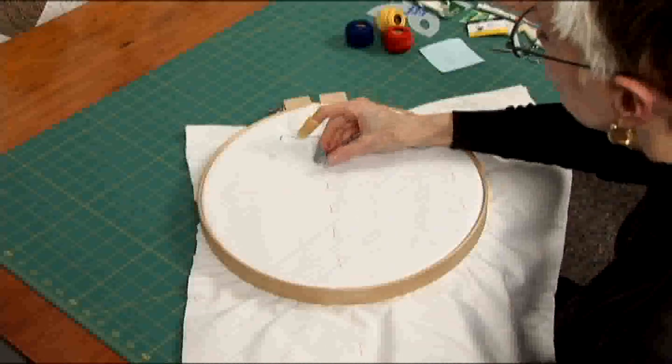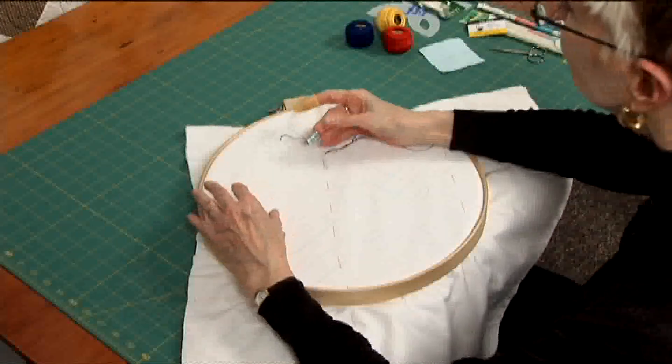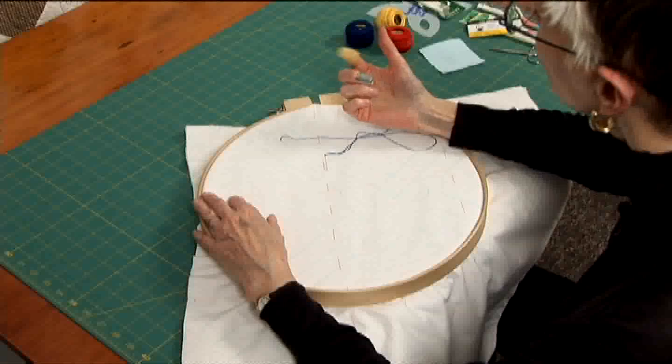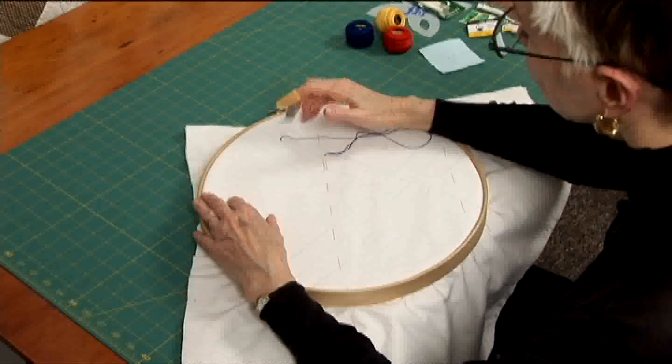This is Big Stitch Lesson number 4 and we're going to cover the thimble, the rubber fingertip, and the quilting stitch.